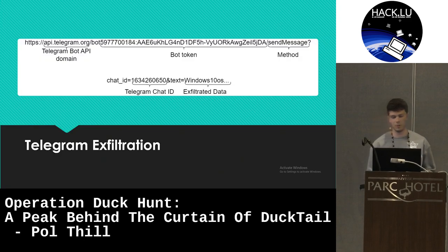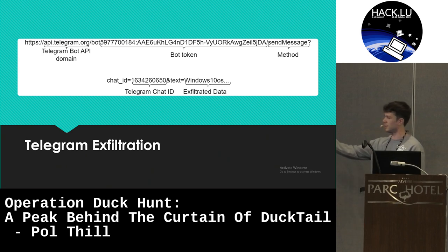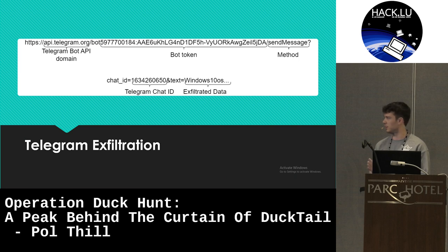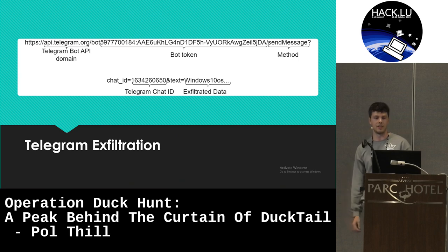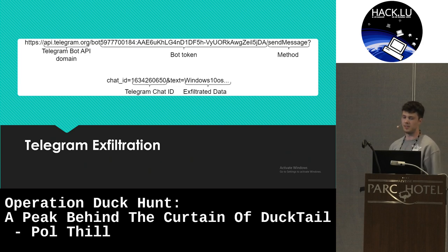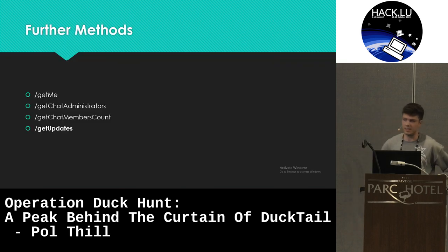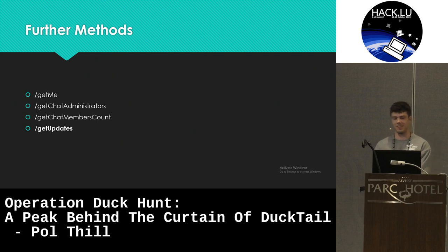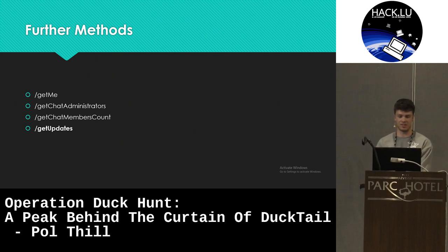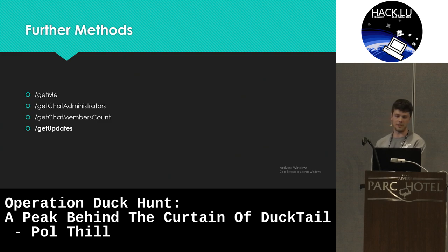The Telegram bot API works like this. First, you have the bot API domain. When you create a bot, you get a bot token from Telegram, and you have to use that token in every API communication. Then you specify the method — in this case, sendMessage, which sends a message to a specified chat — and then the parameters: chat ID and the text you want to exfiltrate. There are several other methods: GetMe returns basic information on the bot like its name. GetChatAdministrators and GetChatMembersCount return whoever created the chat, the administrator, and the member count.